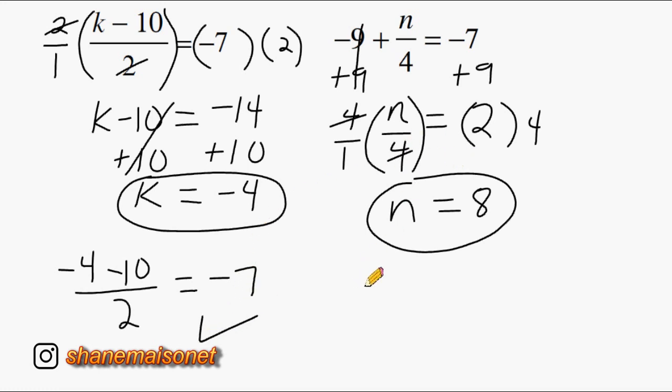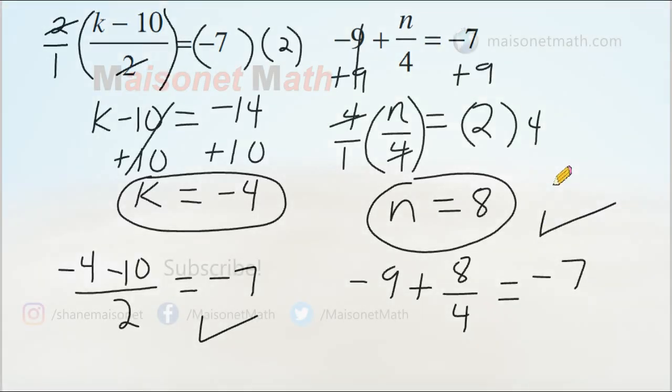Now over here, we had the equation negative nine plus n over four, and n we came up with is equal to eight. So we're going to write eight over four is equal to negative seven. Now, eight over four can be simplified to two. So basically, we have the equation negative nine plus two, which is equal to negative seven. So that equation checks out as well.